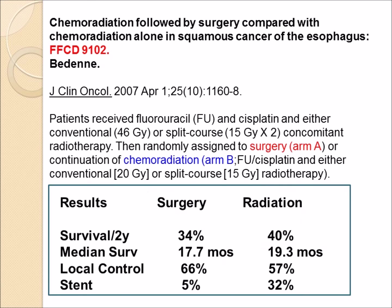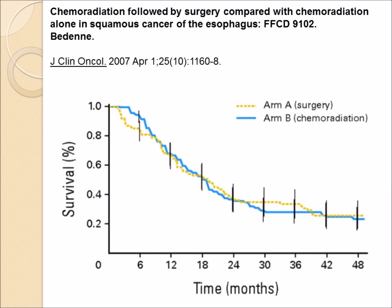Another trial by Badan, the FFCD 9102 trial, again compared preoperative chemoradiation followed by surgery with chemoradiation alone and no surgery. Overall survival was just as good without surgery. There was higher local control in patients who had surgery — 66% versus 57% — and patients who had surgery were less likely to need a stent placed to prevent obstruction: 5% versus 32%. In other words, one in three patients who did not have surgery required a stent to keep the esophagus open enough for swallowing.